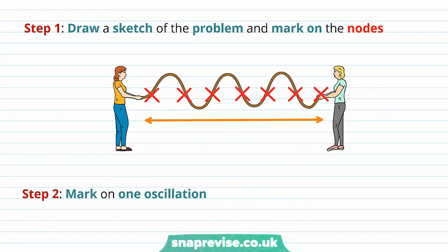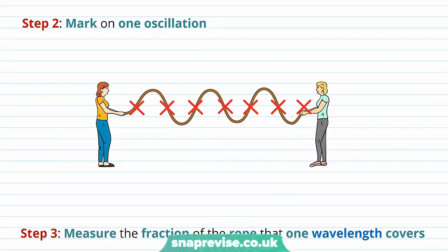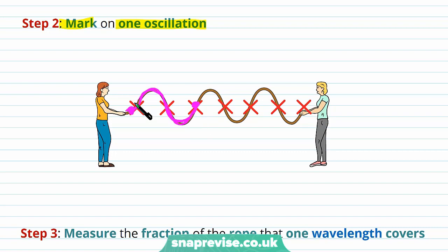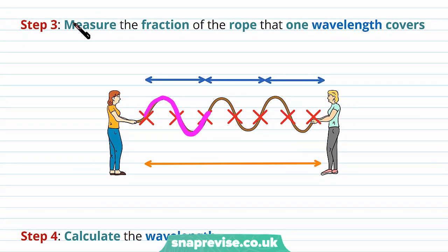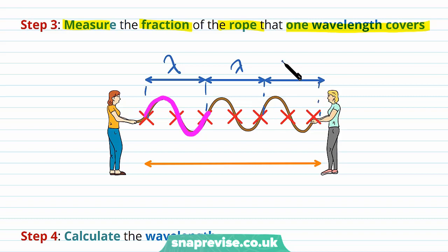Our first step is to draw a sketch of the problem and mark on the nodes — shown as red crosses — with the rope seven meters long. Our second step is to mark on one full oscillation: one complete cycle, because this cycle repeats to produce the full wave. Two points are at the same point in their cycle when they have the same displacement and same velocity. Our third step is to measure the fraction of the rope that one wavelength covers — one wavelength corresponds to the length of one oscillation.